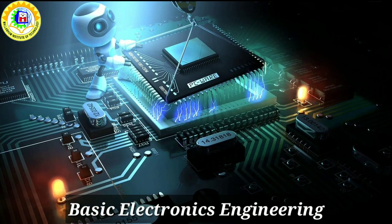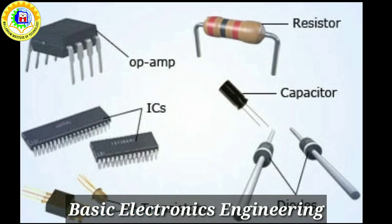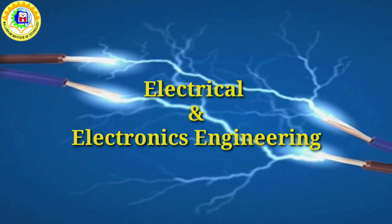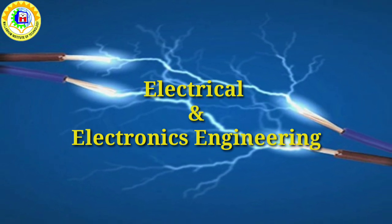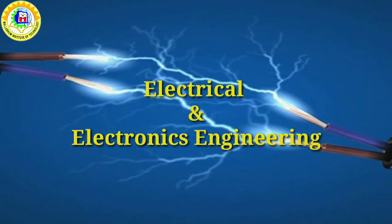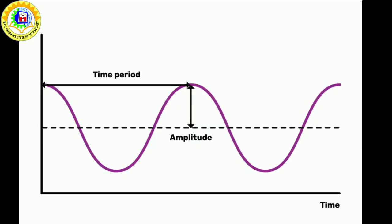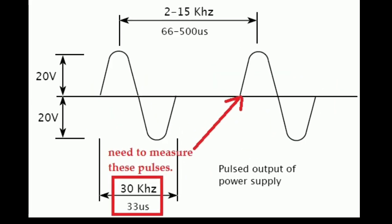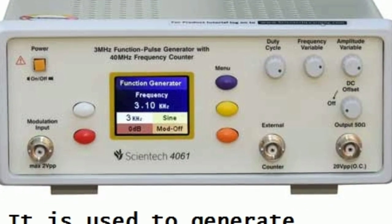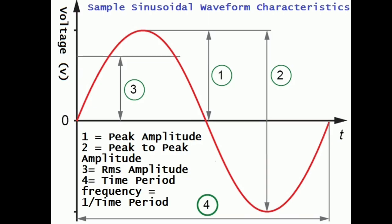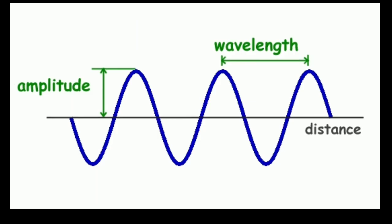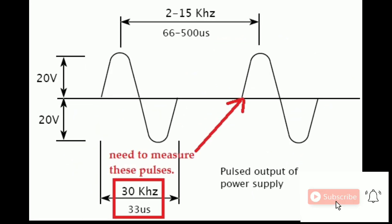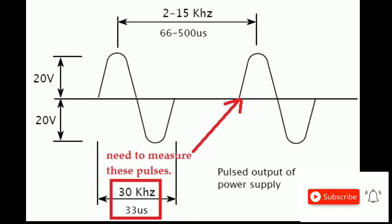Basic electronics engineering is a vital subject for students pursuing graduation in electrical and electronics engineering. Today we will discuss an experiment from this subject, where we are trying to measure the time period, amplitude, and frequency of an unknown signal with the help of a function generator and the DSO. The peak-to-peak amplitude, time period, and frequency are the three basic characteristics of any waveform.